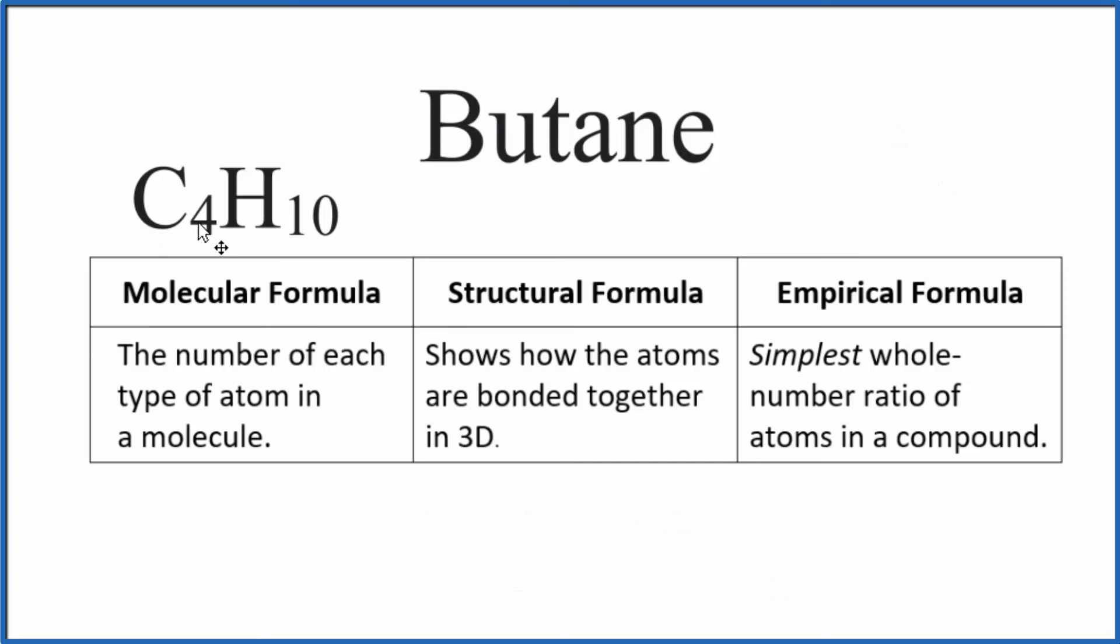Here we can't really divide each number by four. Four doesn't go evenly into 10. So let's divide each number by two. When we do that, four divided by two is two, and 10 divided by two is five. So we get C2H5 as the empirical formula for butane.